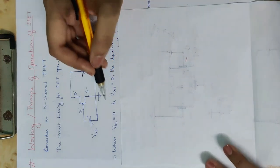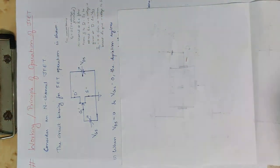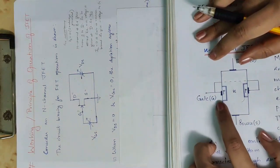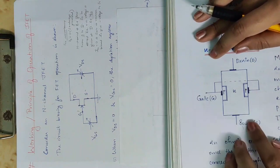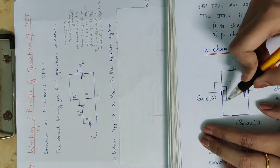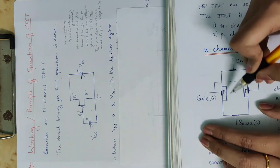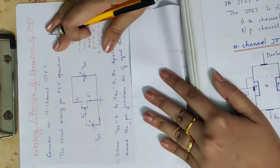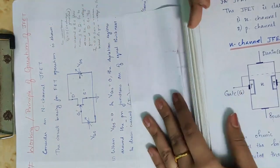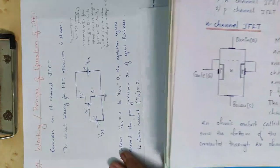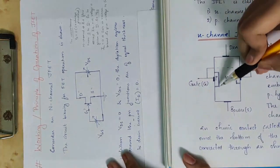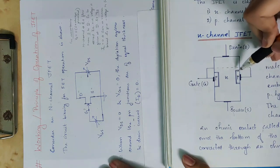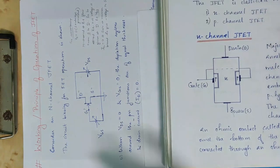When both VDS and VGS are equal to zero, this is our J-FET figure. We already said that the PN junction creates a depletion region, and that depletion region around the PN junctions is of equal thickness. If the drain current is equal to zero, then ID equals zero.